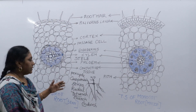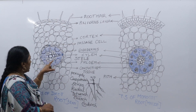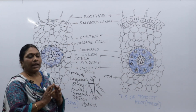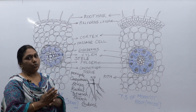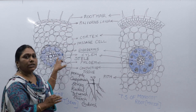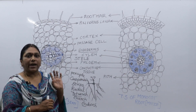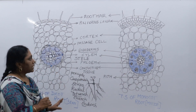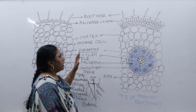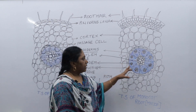The tissue found between xylem and phloem is called conjunctive tissue. In dicot root, this conjunctive tissue is parenchyma. Now coming to monocot root — there is no big difference between dicot root and monocot root except for the vascular bundles.